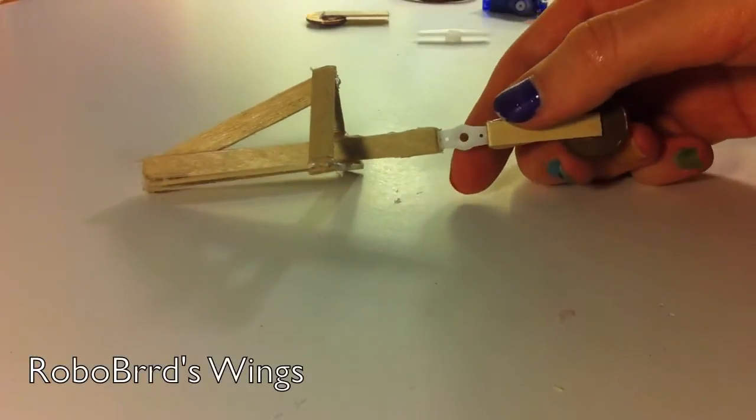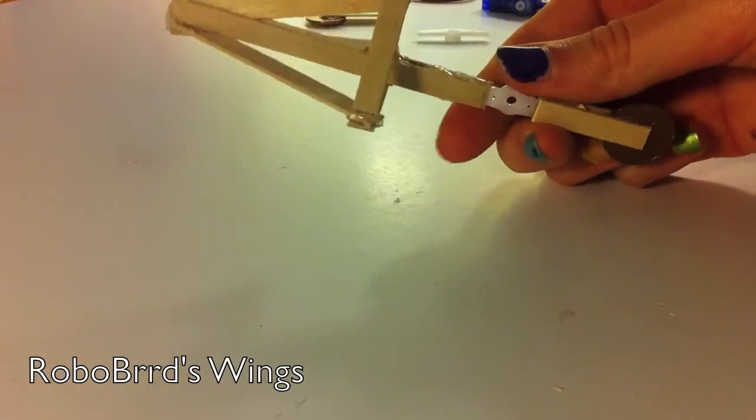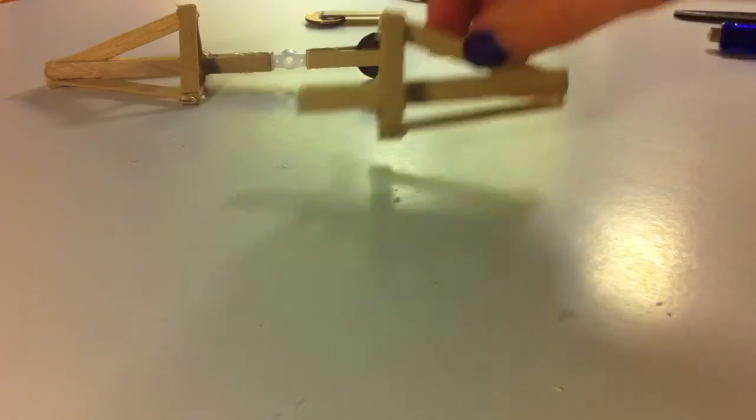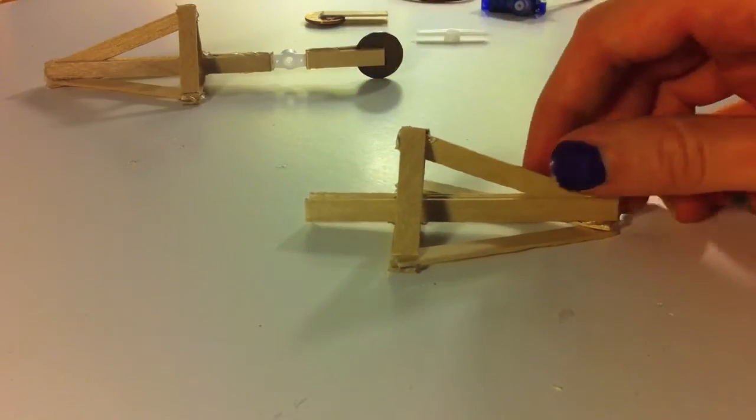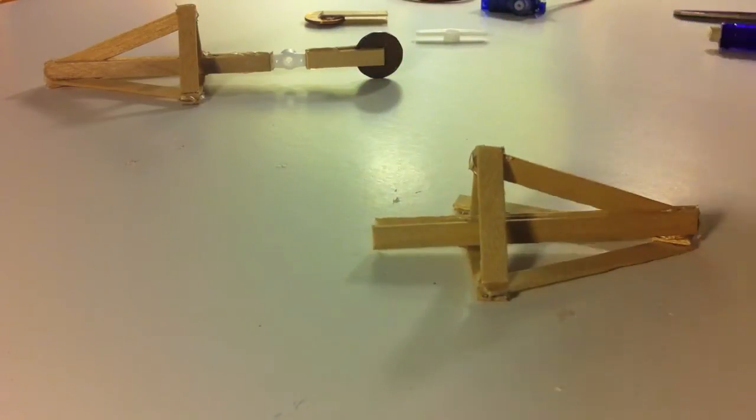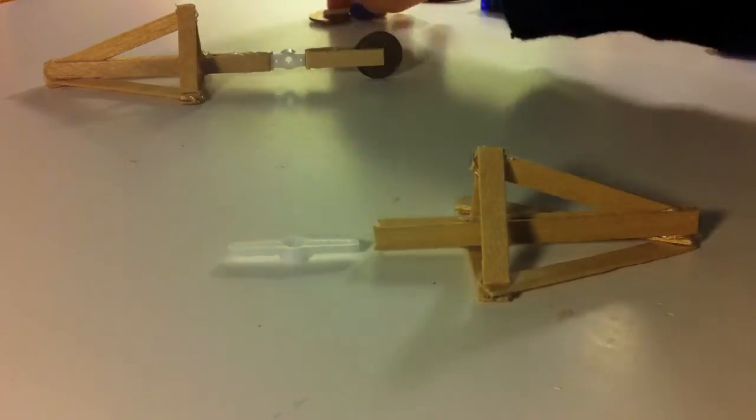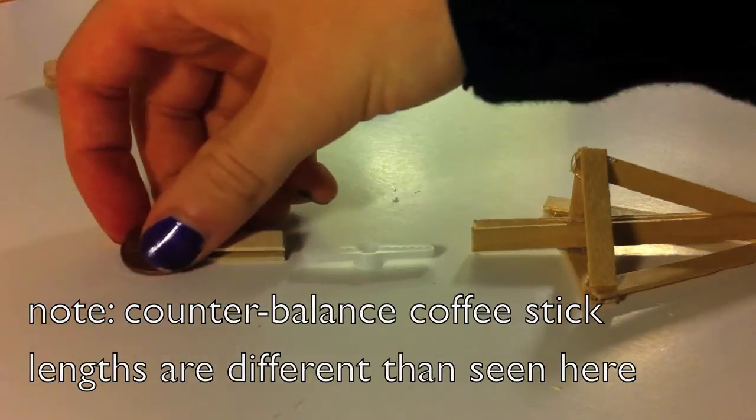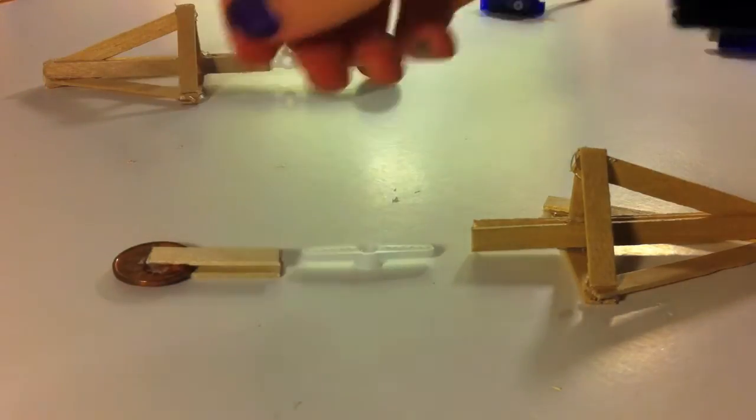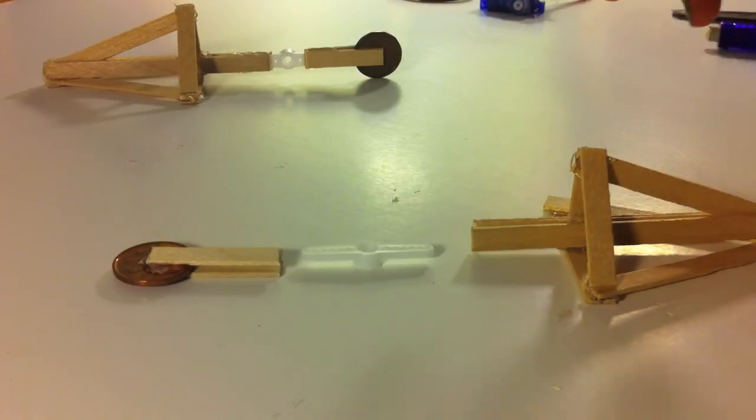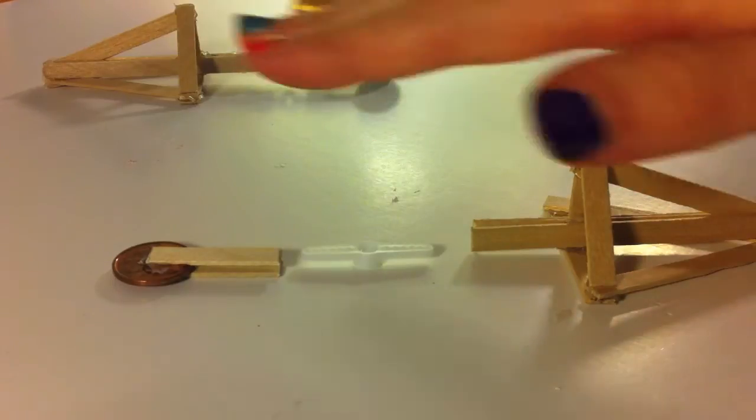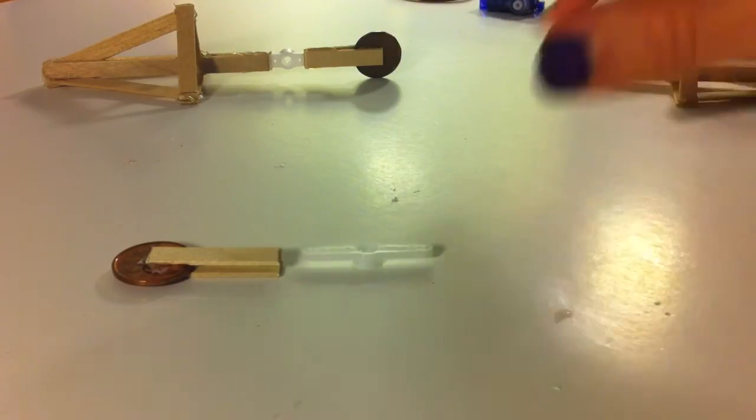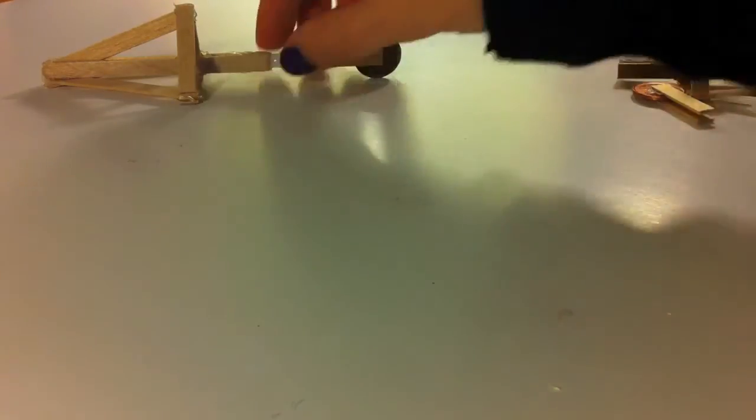Here we have the completed wing construction. Basically all that it is, is just one part of the wing—the actual wing part—attached to the servo horn and attached also to a counterbalance. The point of the counterbalance is so that the balance point of this whole construction is as close as possible to the middle. Let's take a look at this.